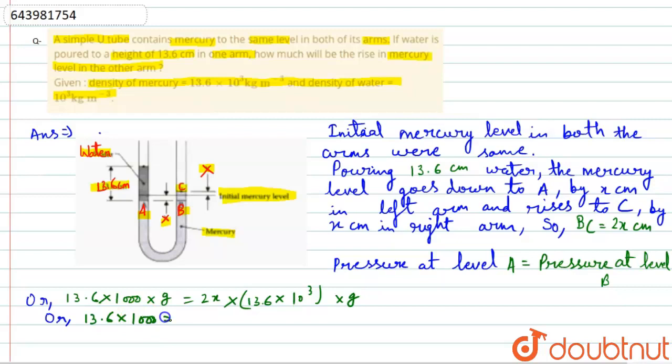Therefore, x = 13.6 × 1000 divided by 2 × 13.6 × 10³